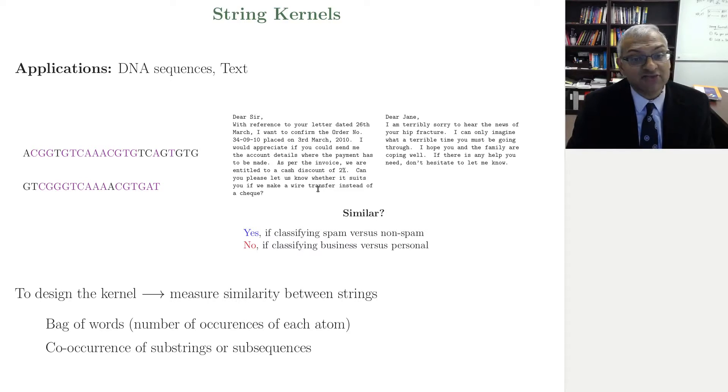On the other hand, if you are classifying business versus personal, I'm trying to build a classifier for my own mailbox, which is business versus personal, then these are not similar. And so whatever your kernel is, for example if you are using bag of words features, then you might identify certain kinds of features as business features, certain kinds of features as spam features, certain kinds of features as personal features.